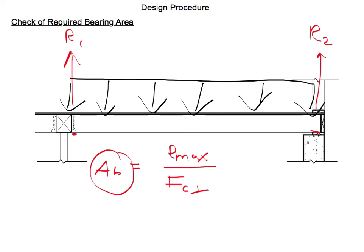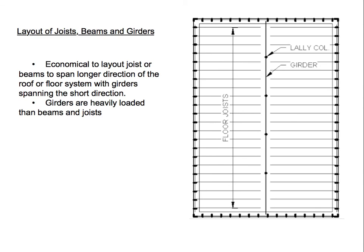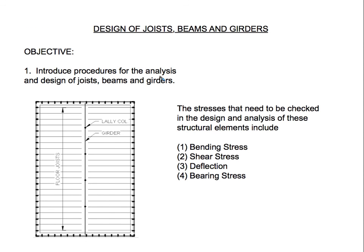A quick recap: we talked about the procedures for the analysis and design of joist beams and girders. You need to find the required section modulus for moment, the required area for shear, the required inertia for deflection — to make sure it's not bouncy — and the required bearing area to make sure the wooden member isn't being crushed wherever it bears. It doesn't settle.